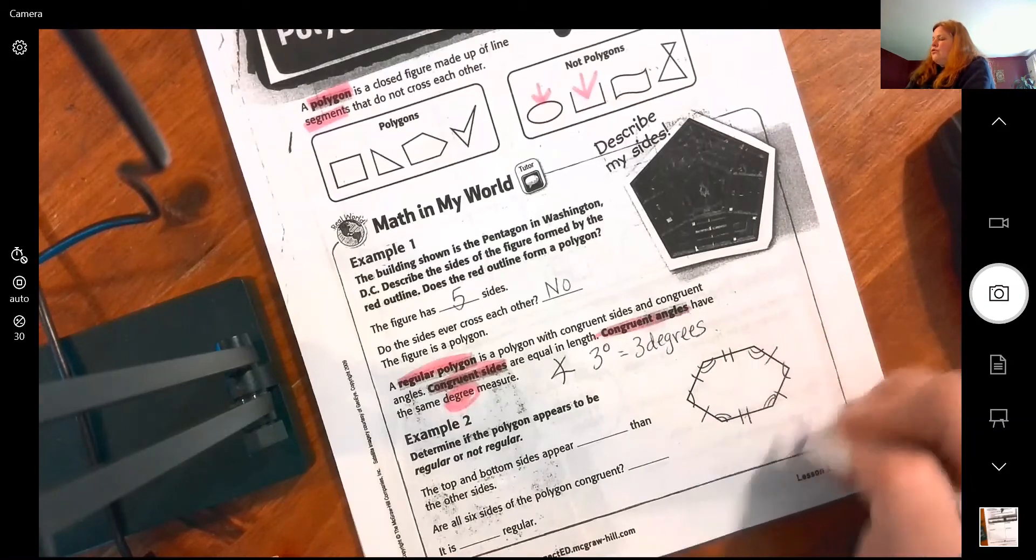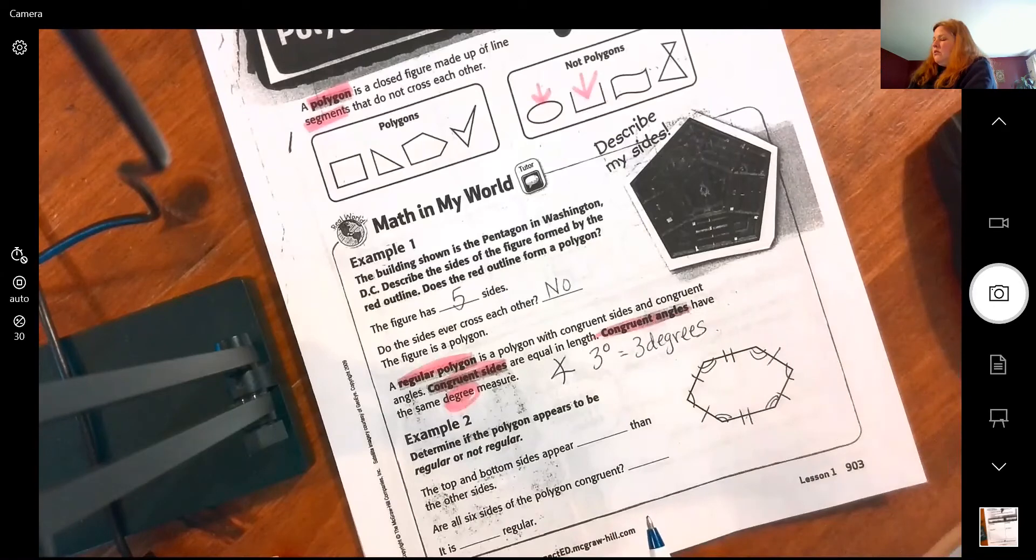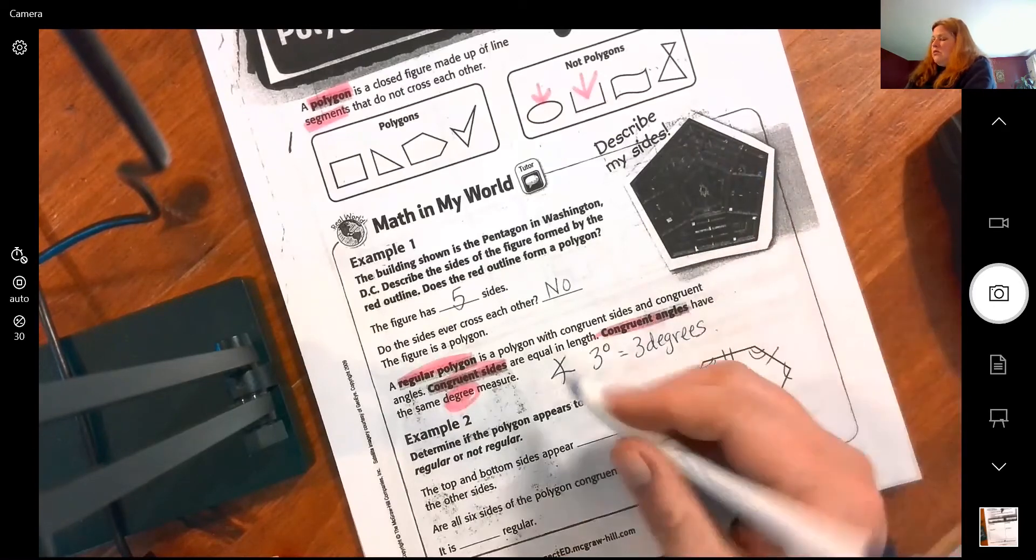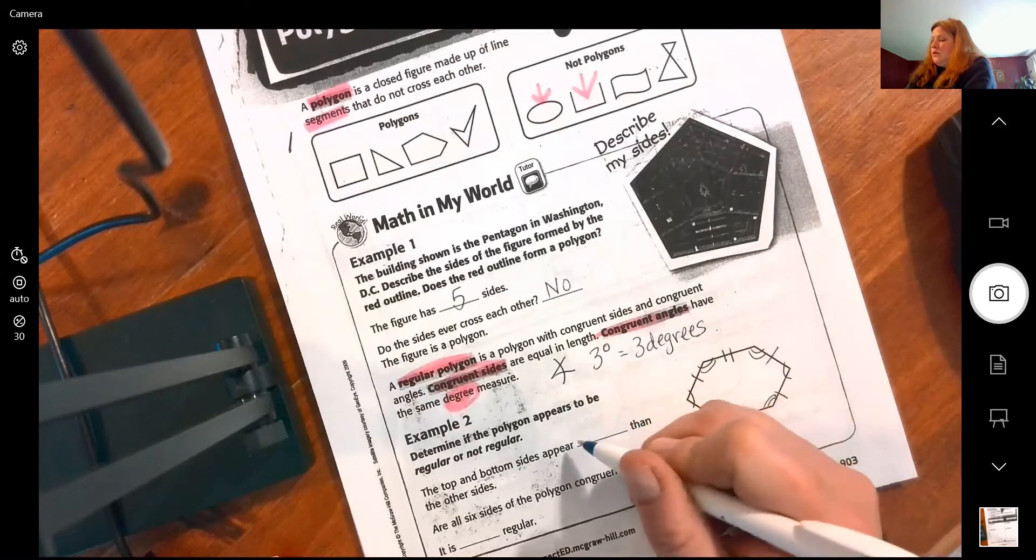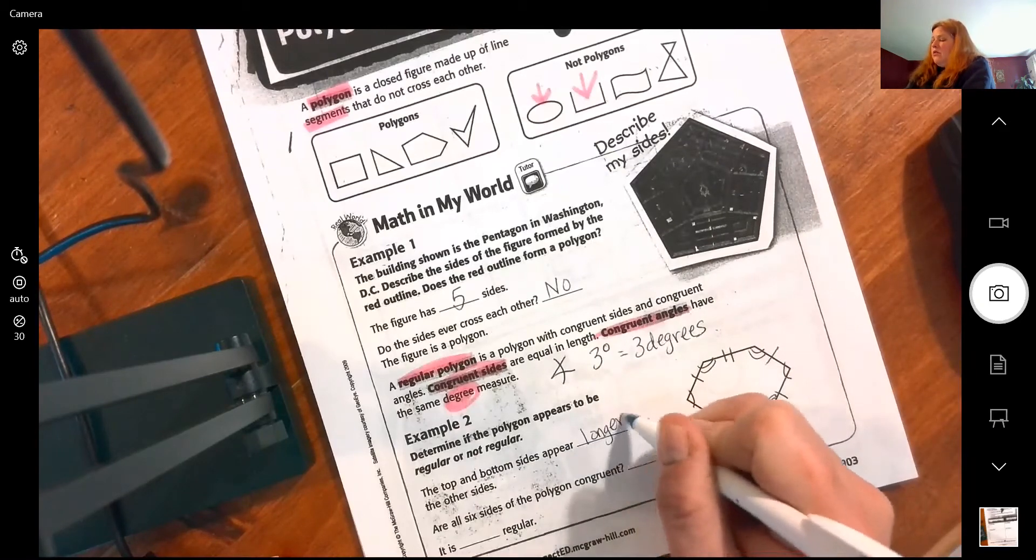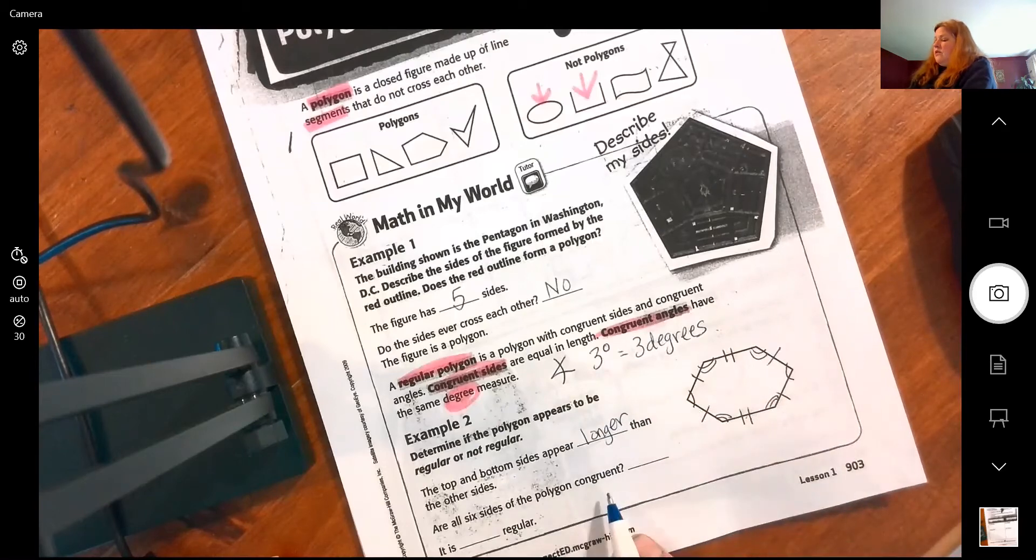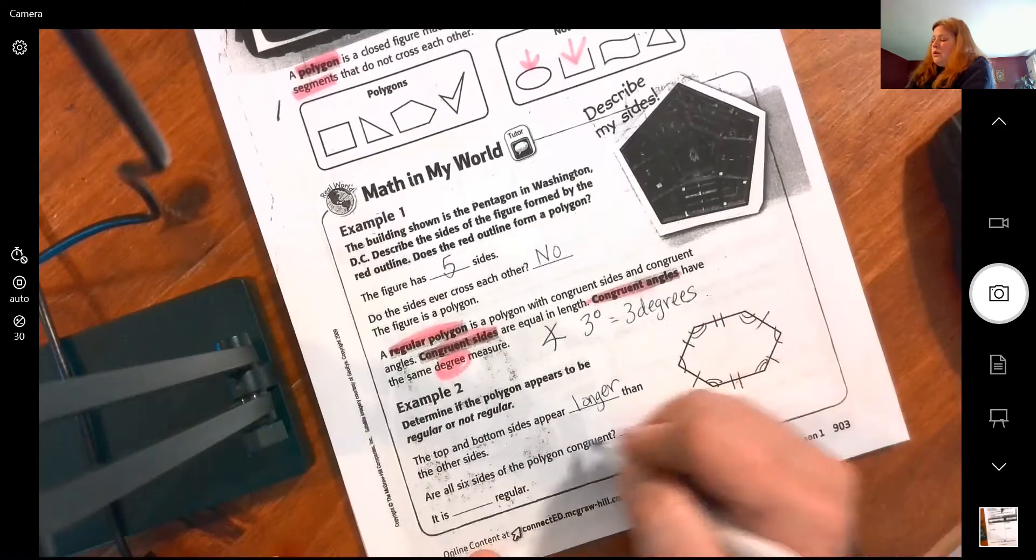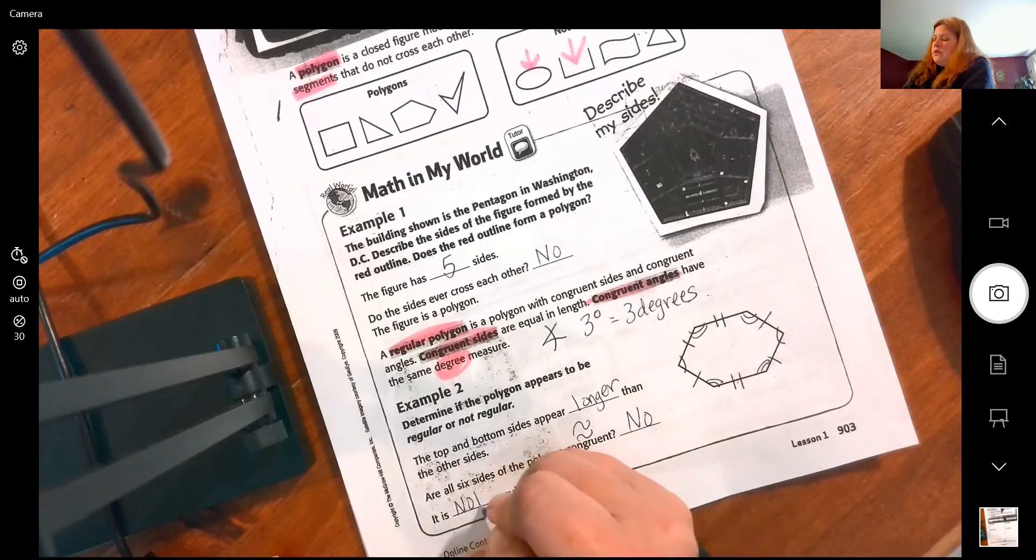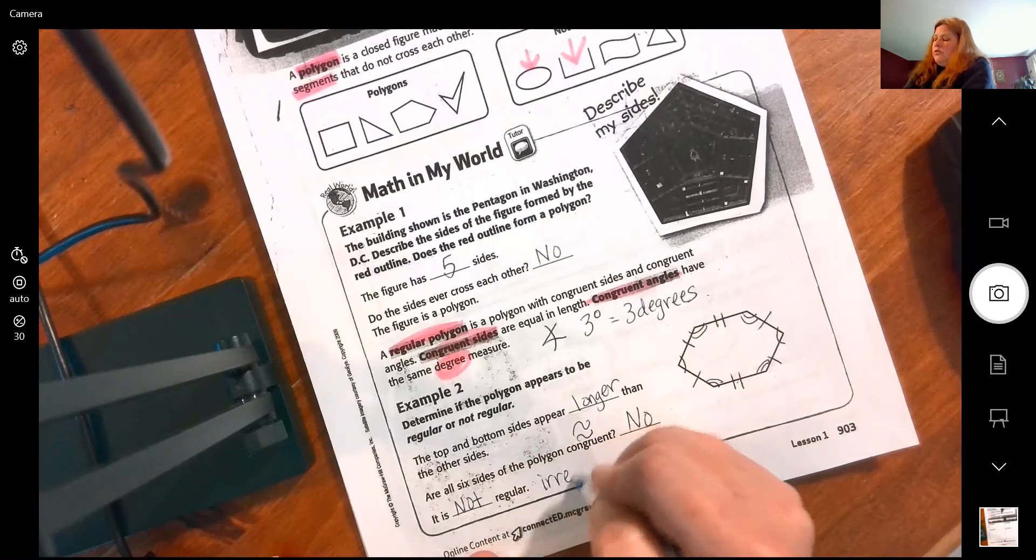So can it be regular? No, it doesn't have all the same sides and angles. The top and bottom sides appear longer. Are all six sides of the shape congruent or equal? No. So it is not regular, or it is irregular.